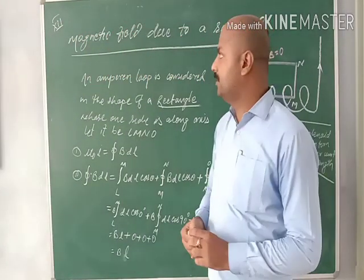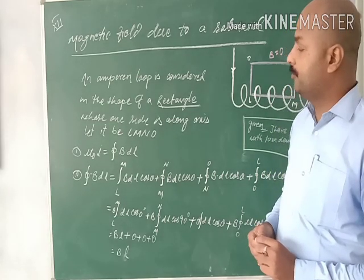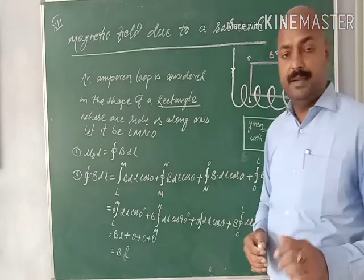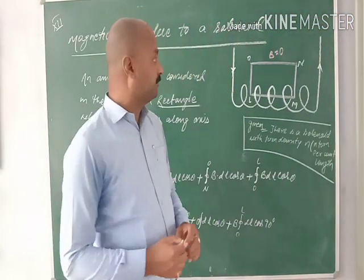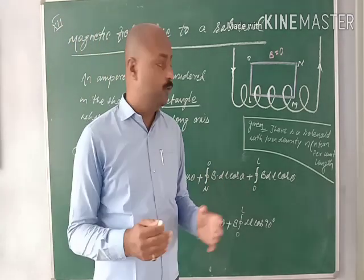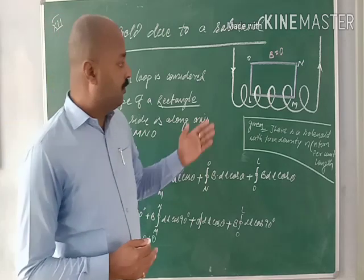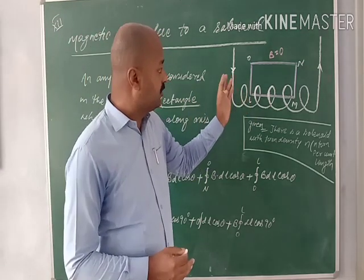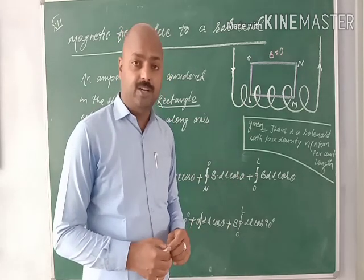Good morning students, this is the video lecture for class 12th. Today we are going to discuss the magnetic field due to a solenoid. In the previous lecture we already discussed the magnetic field due to a current carrying conductor and a loop. Now today we will discuss how to find the magnetic field around or inside a solenoid using Ampere's circuital law.